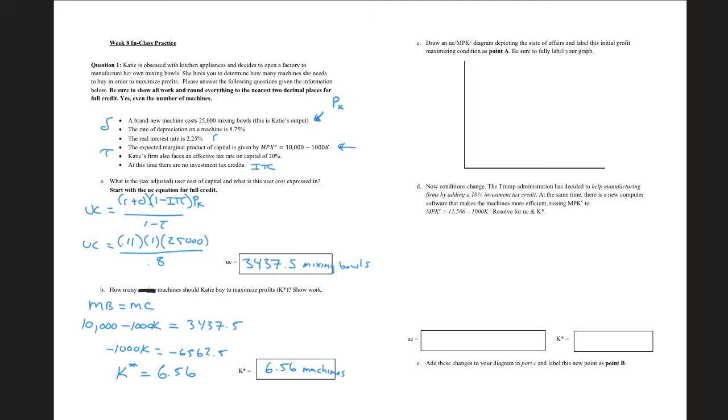Now we can go ahead and draw this diagram. We have K is going to be on the horizontal axis. We have both the user cost of capital and MPKE on the vertical axis. We know the user cost of capital. I'm going to grab an actual line here instead of drawing it freehand. We know the user cost of capital is going to be a straight line like this. So I know that's my user cost of capital.